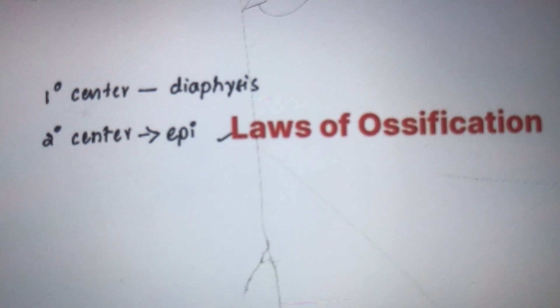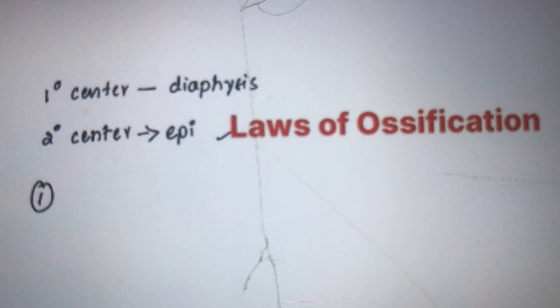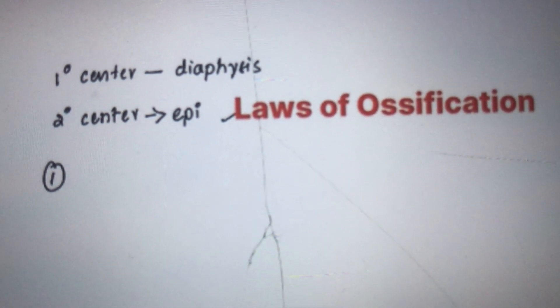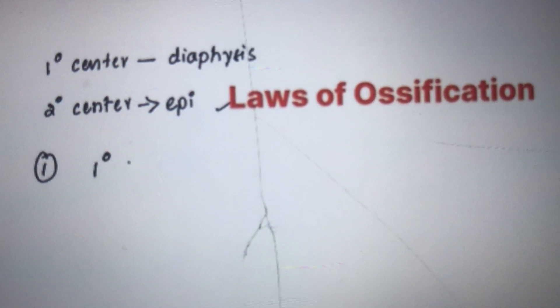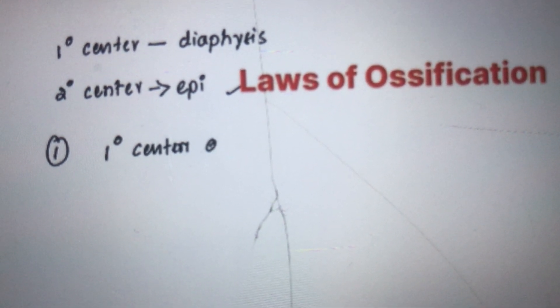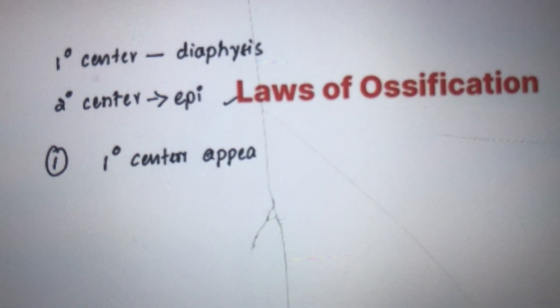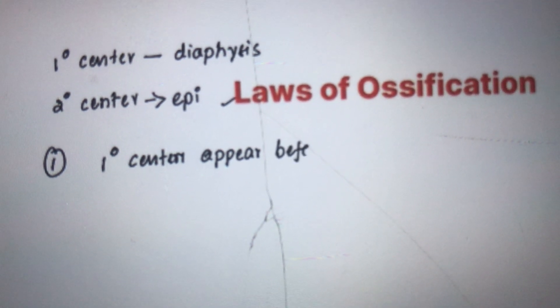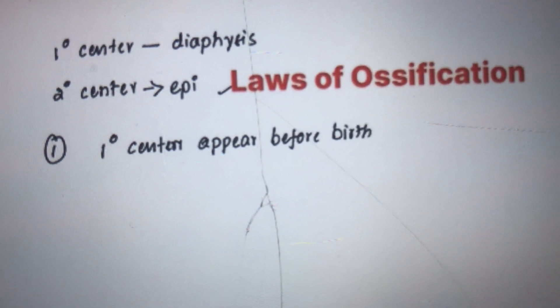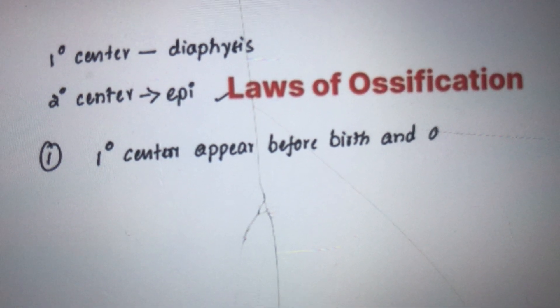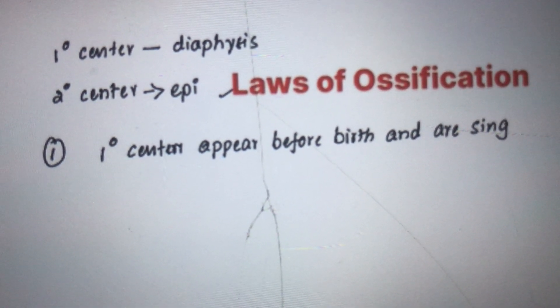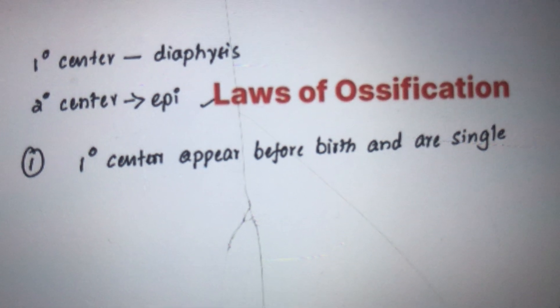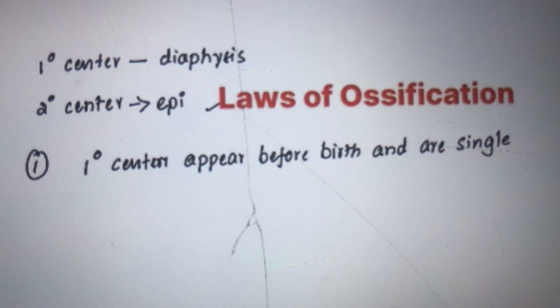The appearance and fusion of ossification centers follow certain rules, referred to as laws of ossification. The first law states that primary centers appear before birth and are usually single.